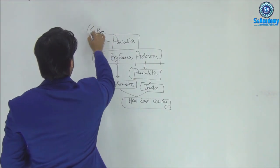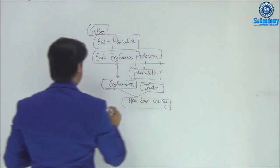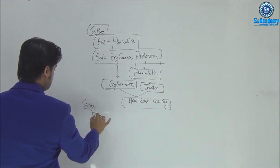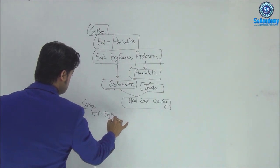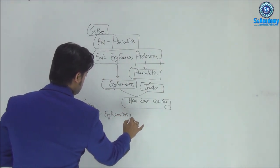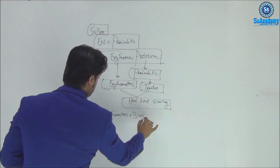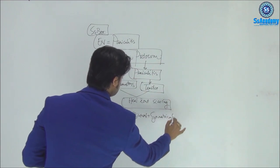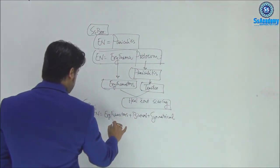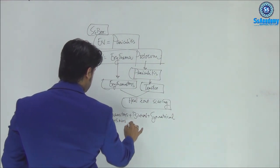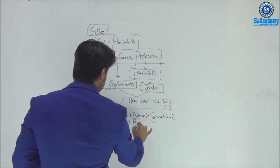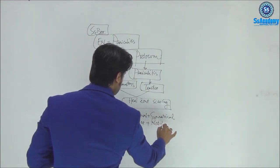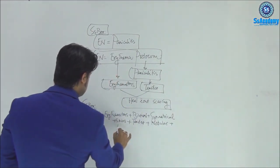Giving a summary SS box of erythema nodosum: erythematous, bilateral, plus symmetrical, over both shins of the leg. Lesions are usually tender and nodular, and of course heal without scarring.